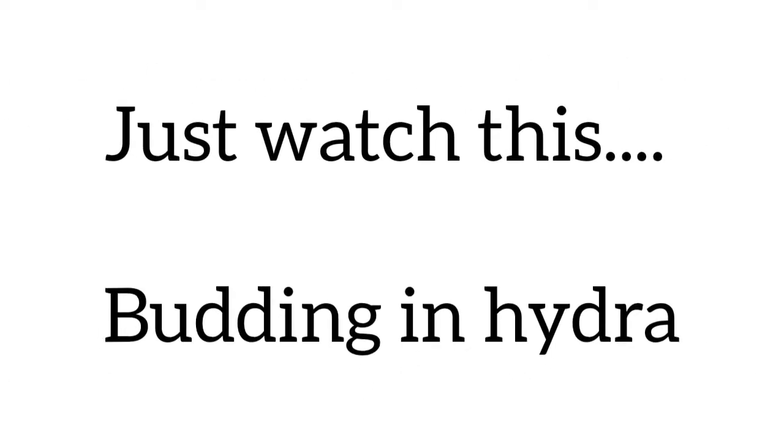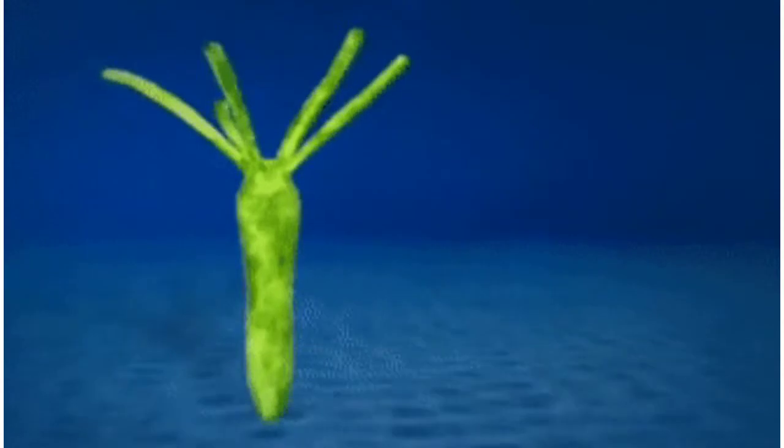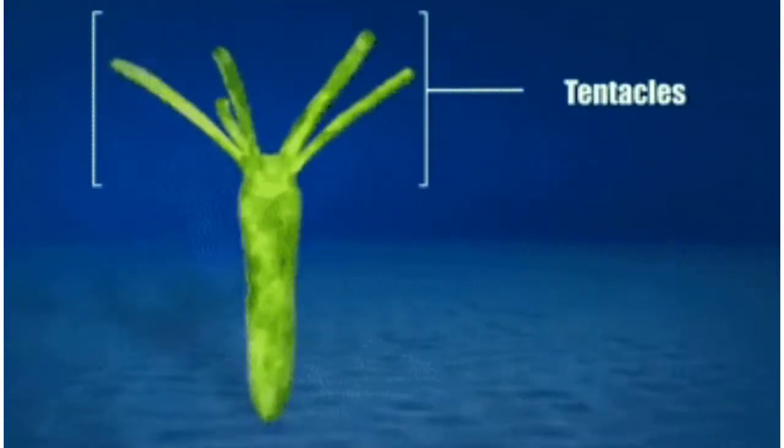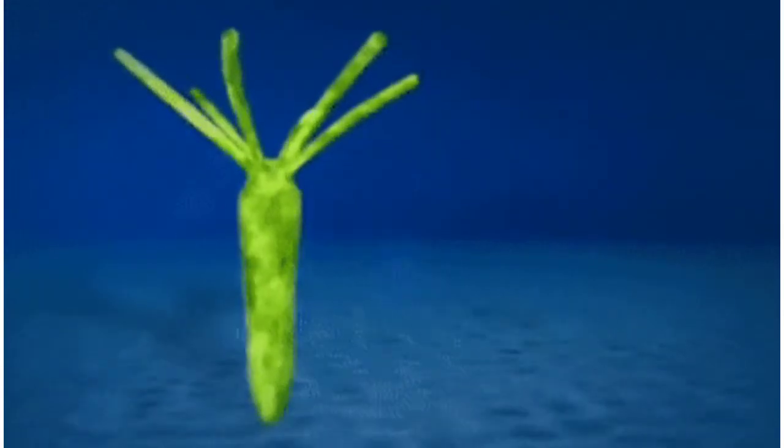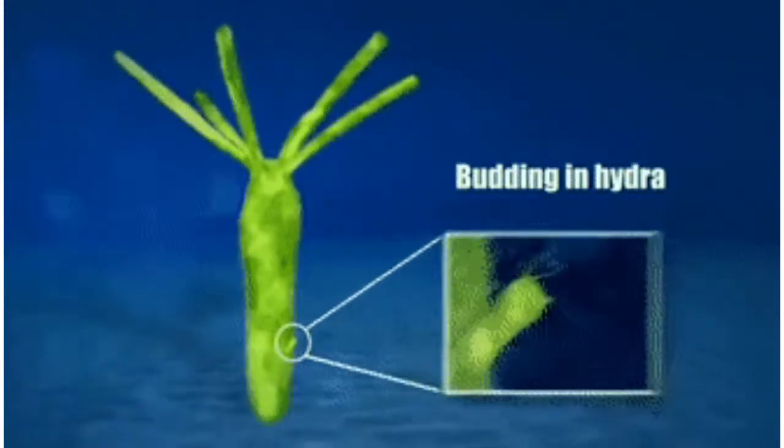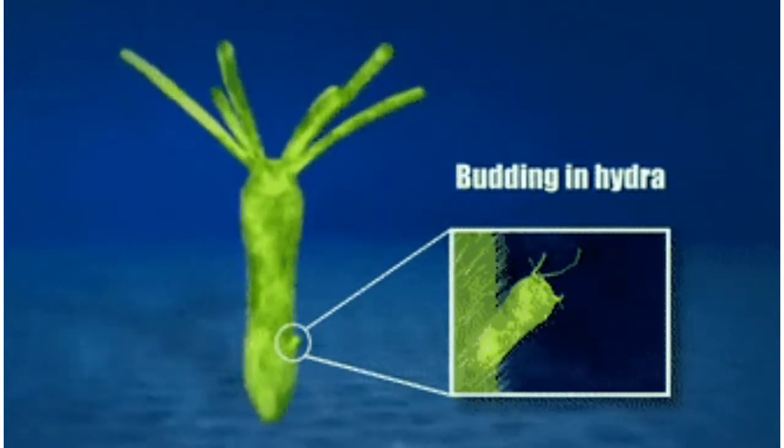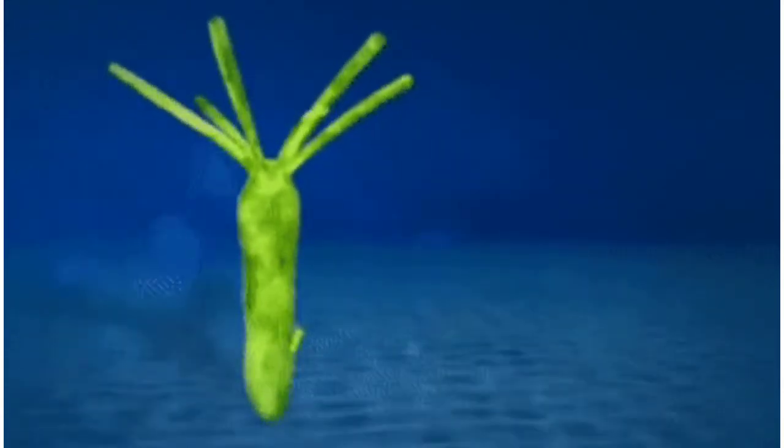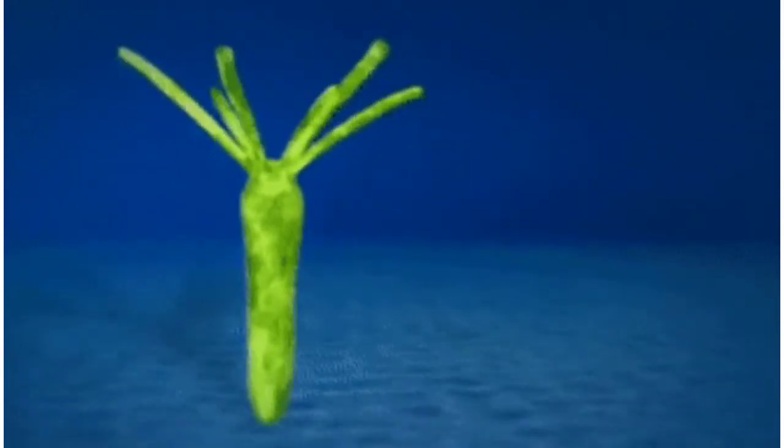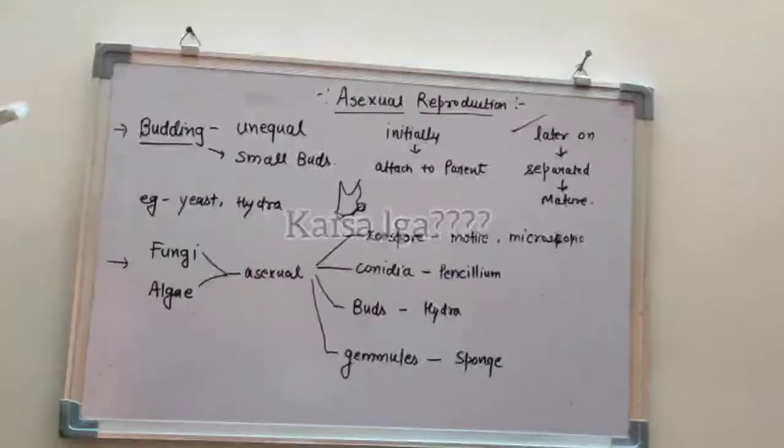Now watch how there is budding in hydra. This is an adult hydra. On the top of this hydra, there are tentacles and hypostome. Look at this, this is budding. You are attached to the parent and later on it will be separated.